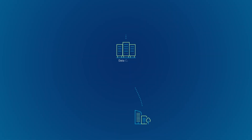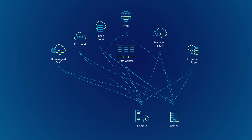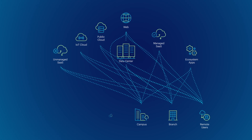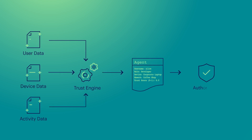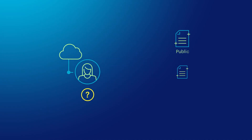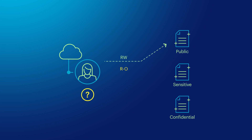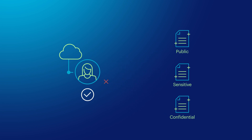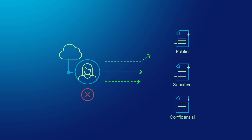Early Zero Trust models still evinced a network-centric approach. But as the world moved from one data center to many centers of data, along with workers everywhere except the office, a resource-centric approach became necessary. For two entities to interact, some level of trust must be established between them, and the context surrounding the interaction must be evaluated to determine that level. For example, if Alice is on an unmanaged device, she receives read-write access to public content, read-only access to sensitive content, and no access to confidential content. If she's on a managed device, she receives full access to all content. If her device later exhibits signs of compromise, her access is instantly revoked.